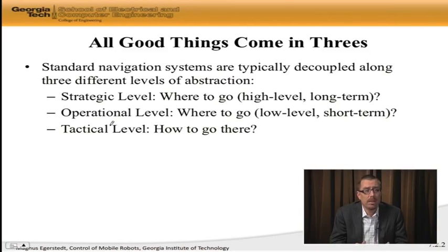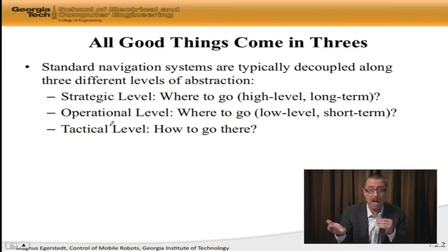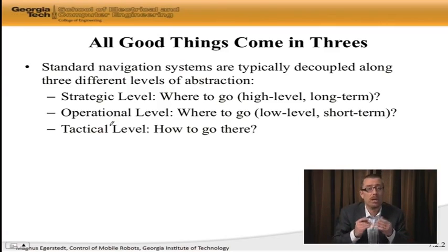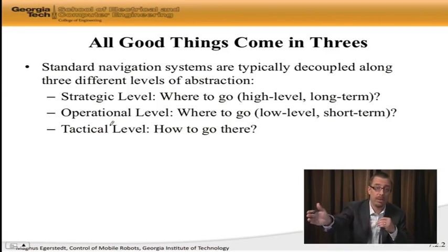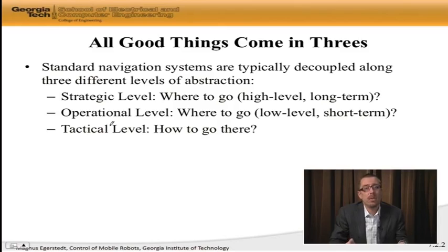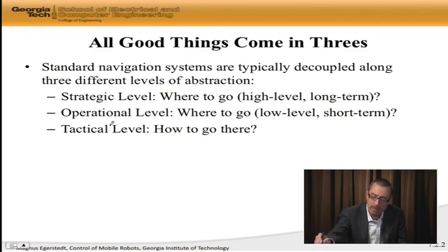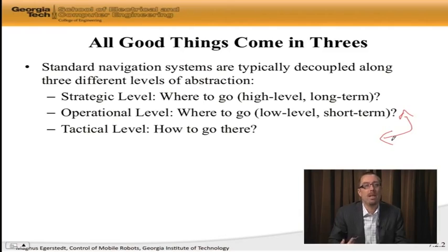Then we have the lowest level, the tactical level, which asks: I know that I want to go this way, but how do I actually do that? I'm a snake robot — how does a snake go in this direction? Or I'm a differential drive mobile robot, a unicycle — how do I actually go in this direction? So the question of mapping x dot equal to u onto the real robot is a question of moving in between these two levels or layers in the architecture.